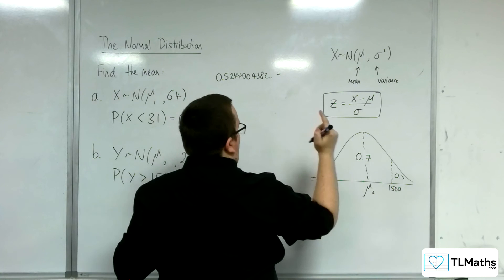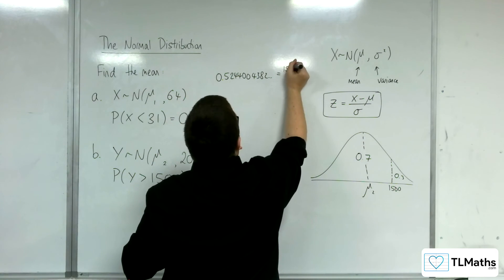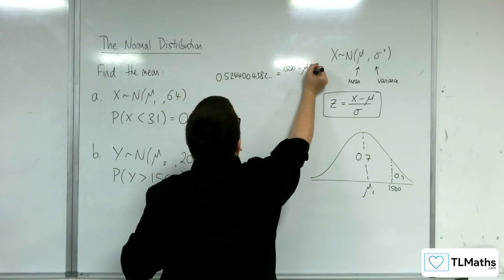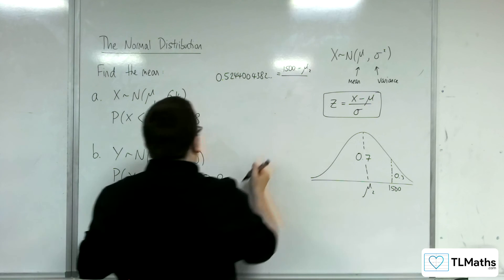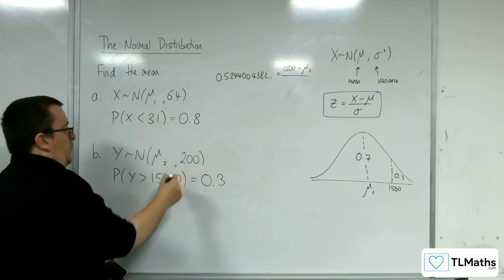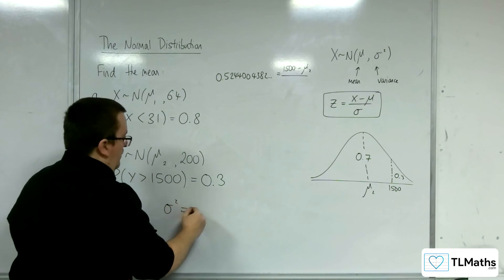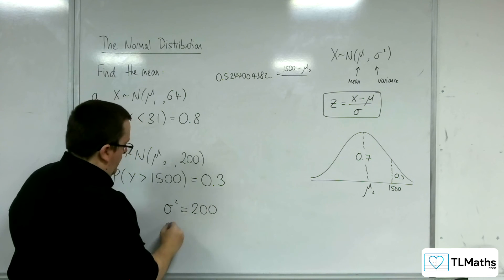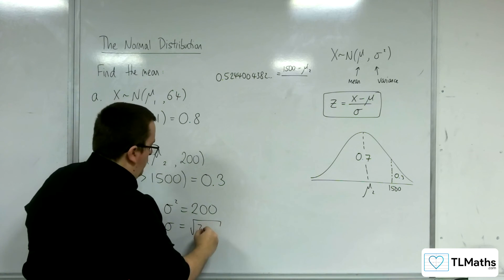And that's equal to X, which is the 1500, take away the mean, which is mu2, over sigma. Now, in this situation, sigma squared, the variance, is given as 200. So sigma must be the square root of 200.